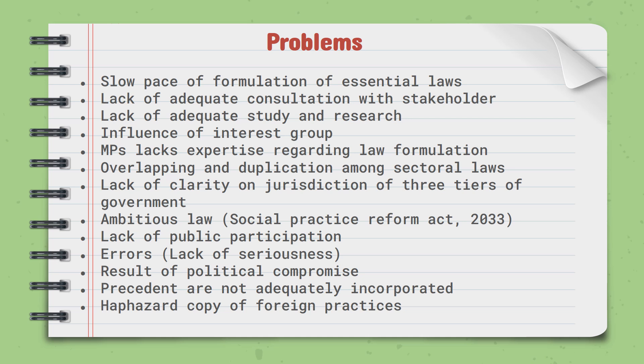What are the problems of the lawmaking process in Nepal? Slow pace of formulation of essential laws — while recording this video, we don't even have a federal civil service act. Lack of adequate consultation with stakeholders. Lack of adequate study and research. Influence of interest groups. Members of parliament lack expertise regarding law formulation. Overlapping and duplication among sectoral laws. Lack of clarity on the jurisdiction of the three tiers of government. Ambitious laws such as the Social Practice Reform Act 2033, which said we can make a limited number of participants in marriage, but no one follows the law.